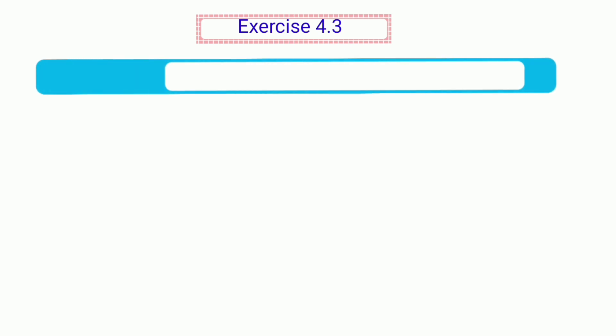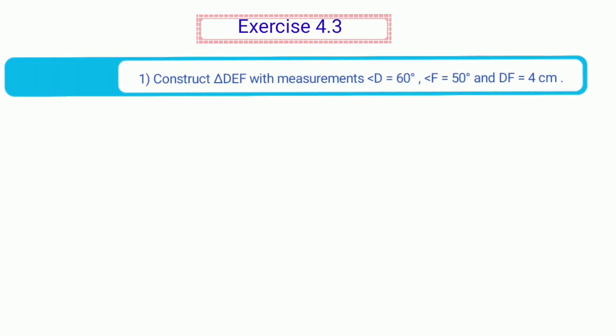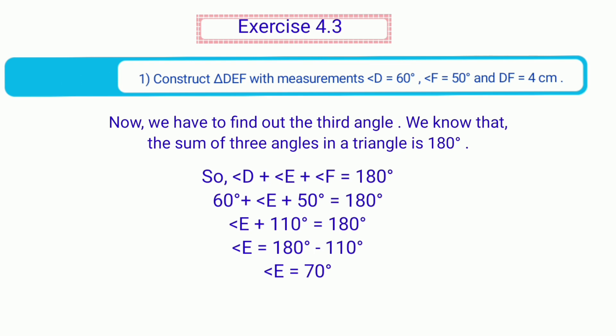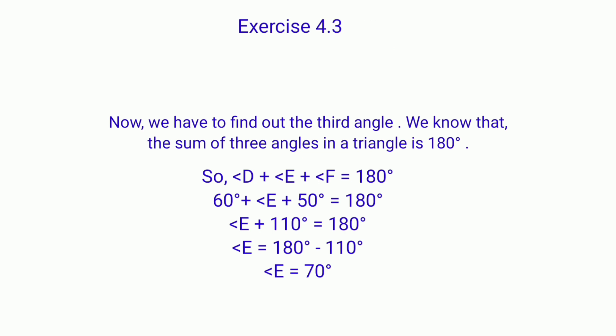Exercise 4.3, first sum: Construct triangle DEF with measurements angle D equals to 60 degrees, angle F equals to 50 degrees, and DF equal to 4 cm. We know the sum of three angles is 180 degrees. So angle D plus angle E plus angle F equals 180 degrees. That gives 60 plus 50 equals 110 degrees, therefore angle E equals 180 minus 110, which is 70 degrees.